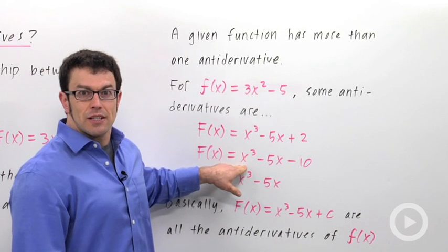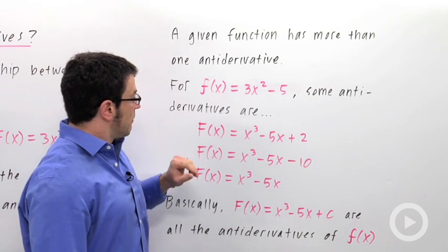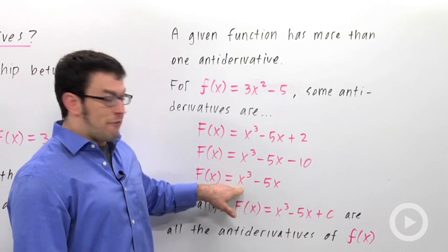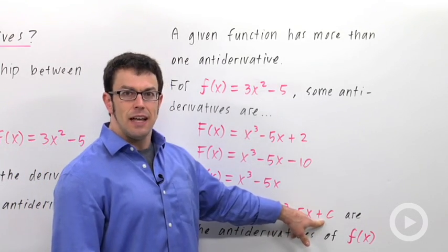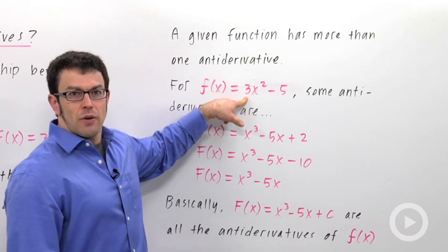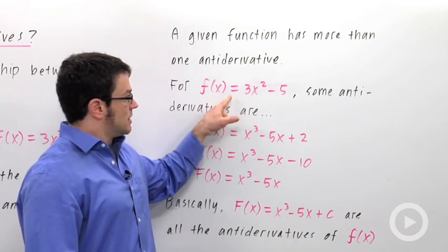But this function's derivative is 3x squared minus 5 as well. So this will be an antiderivative of little f, and so will this. And in fact, every function of the form x cubed minus 5x plus c has derivative 3x squared minus 5, and so these will all be antiderivatives of this function.